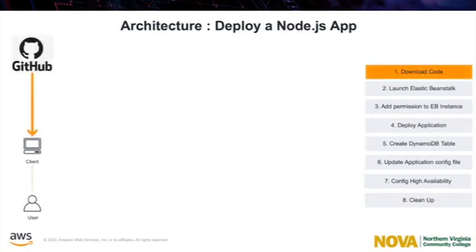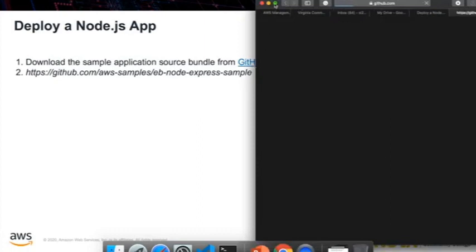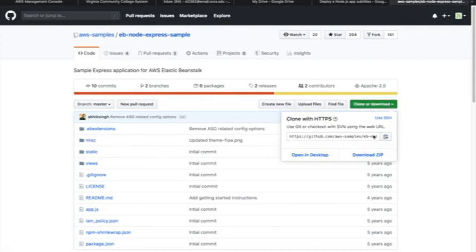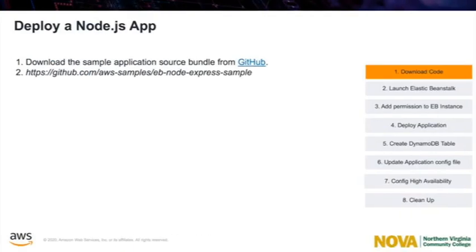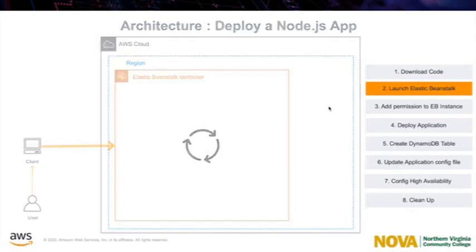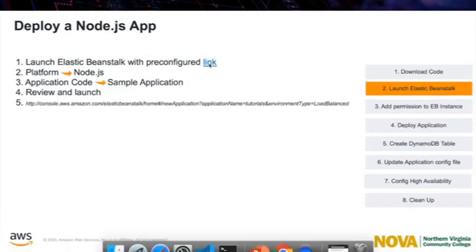Before you start, download the sample application source bundle from GitHub. We will use the Elastic Beanstalk console to launch an Elastic Beanstalk environment. We will choose the Node.js platform and accept the default settings and sample code.